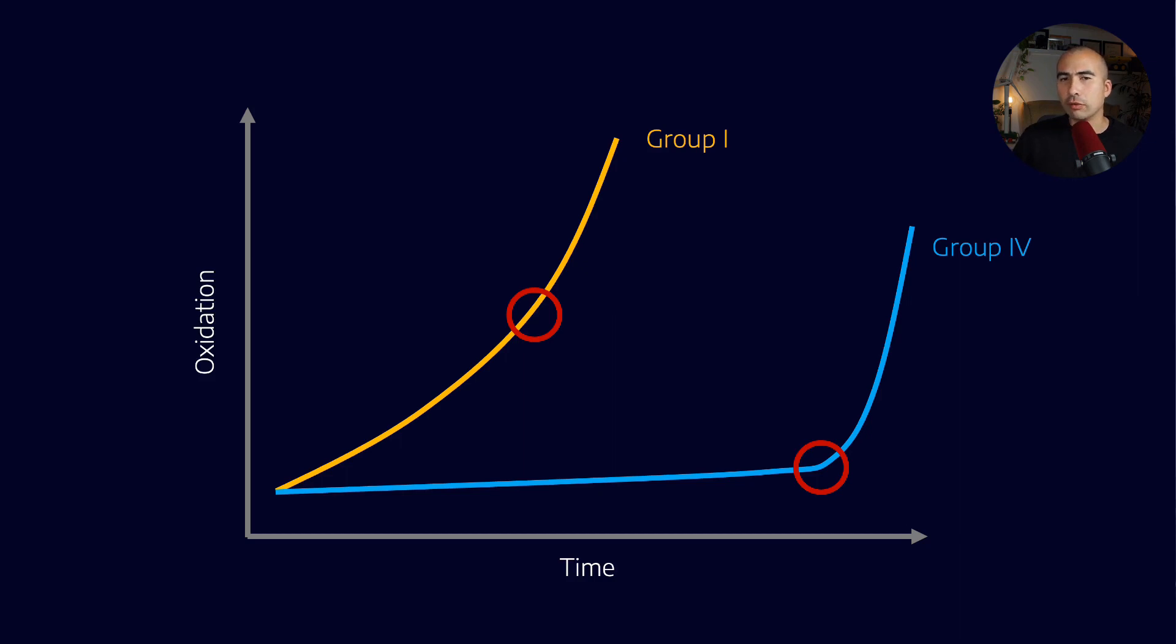It might seem a little bit counterintuitive, but if you test the oxidation stability of a Group 1 versus a Group 4 lubricant, often the Group 1 will come out on top. The reason is that without additives, Group 1s actually have some inherent oxidation stability themselves. The sulfur-containing molecules act as antioxidants themselves.